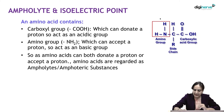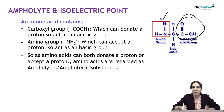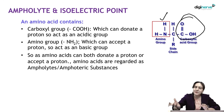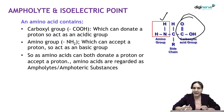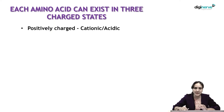The amino group can accept a proton and the carboxylic acid group can donate a proton. This ability of amino acids to both donate and accept a proton is why they are known as ampholytes or amphoteric substances.